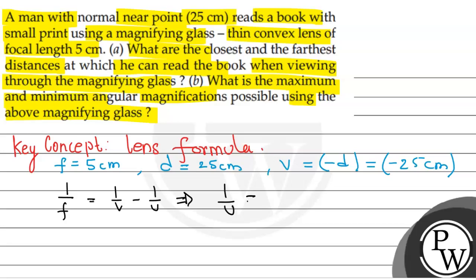Just simplify. 1 over U equals 1 over V minus 1 over F. This is equal to 1 over minus 25 minus 1 over 5, minus 5 minus 1 over 25. This is equal to minus 6 over 25, which is equal to minus 4.167 centimeters.